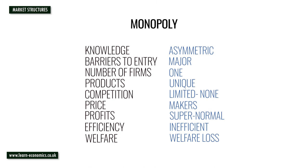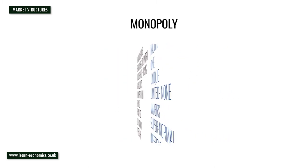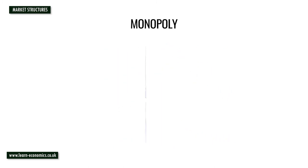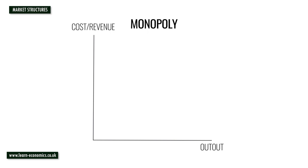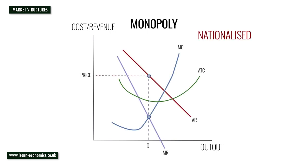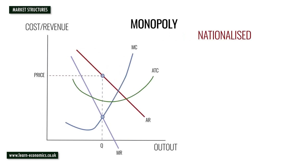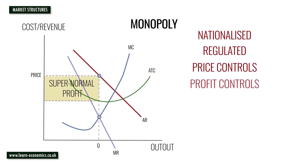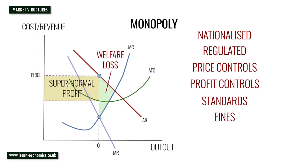Given the likelihood that monopolists may act against the interests of consumers and the national economy, they may be nationalised or tightly regulated through price controls, profit controls and special taxes, setting standards, finding anti-competitive practices, and establishing competition regulators such as the Federal Trade Commission in the US and the Competition and Markets Authority in the UK.